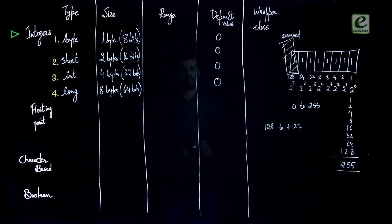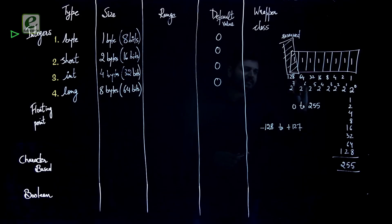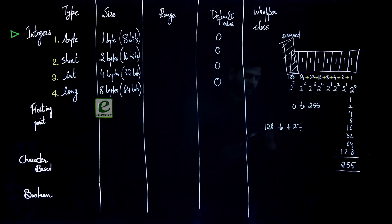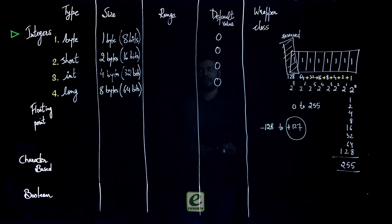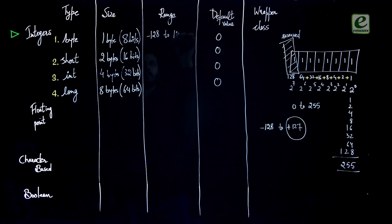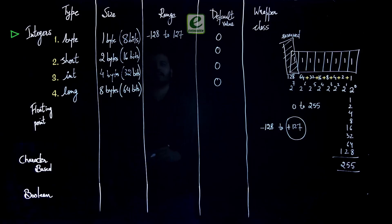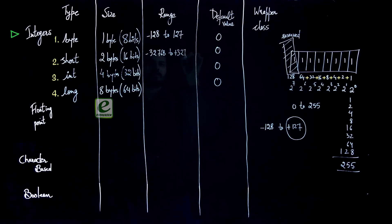If we don't consider the MSB's 128 value and instead add 64 plus 32 plus 16 plus 8 plus 4 plus 2 plus 1, we get positive 127. So for 8 bits with signed data types the range is minus 128 to 127. For short, the range is minus 32768 to plus 32767.